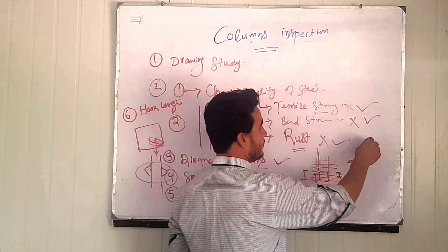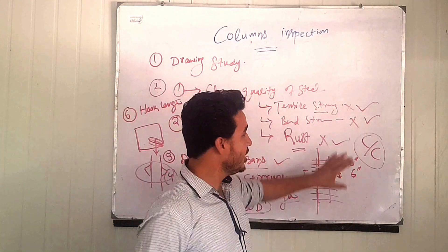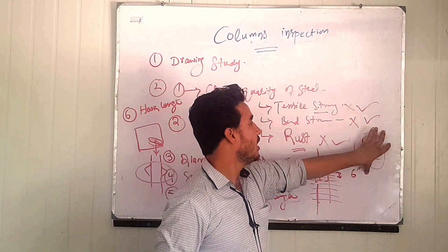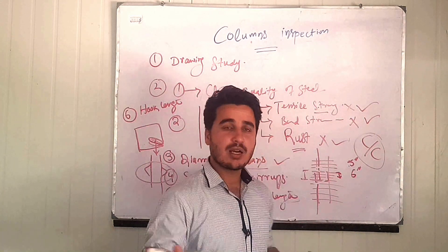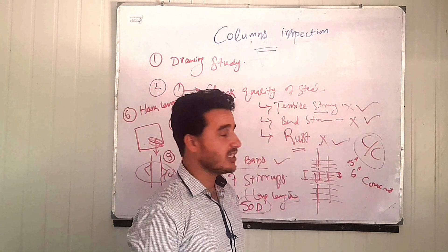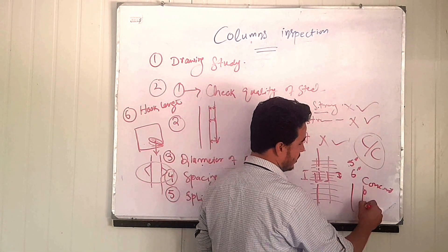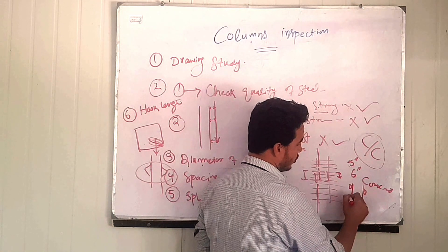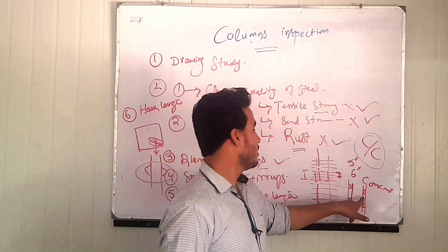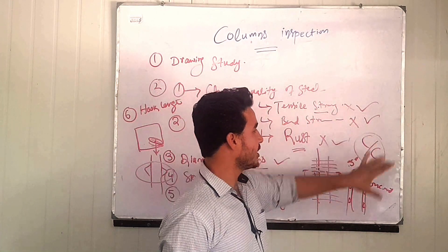One last important point is the concrete cover. Equal concrete cover shall be maintained on both sides of the column. Concrete spacers are used on the column sides to ensure equal spacing of reinforcement from the formwork, preventing the rebar from rusting and maintaining bond strength. I will show you concrete spacers on the construction site in a future video.